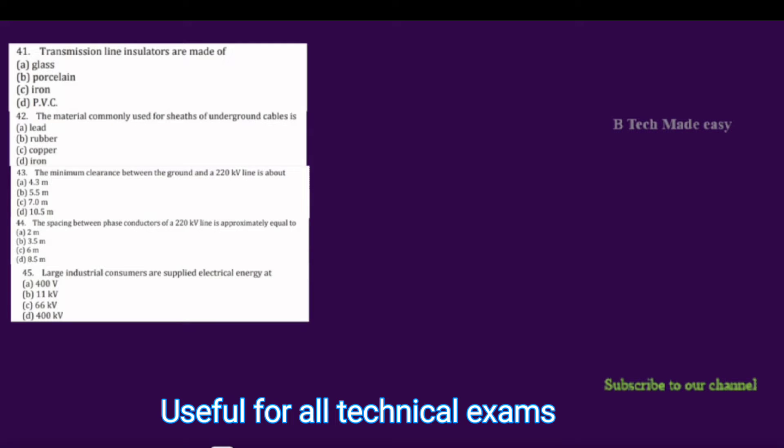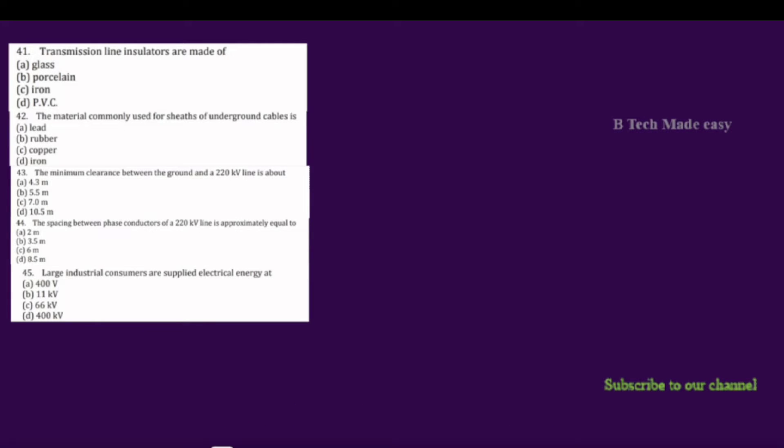We have one type of insulators. The options are: glass, porcelain, iron, and PVC. We have four options.